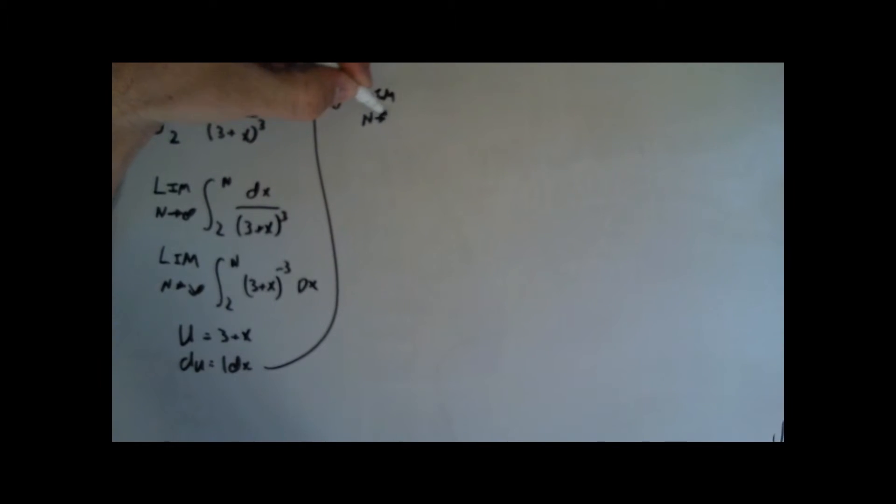I'm going to simplify this. 2 to n, and I'm going to say 3 plus x to the negative 3 dx. That is very easy to integrate. I'm going to set up a u-substitution and say u equals 3 plus x. du equals 1 dx as I take the derivative of 3 plus x. Then I'll throw it back together and say the limit as n approaches infinity of u to the negative 3 du.